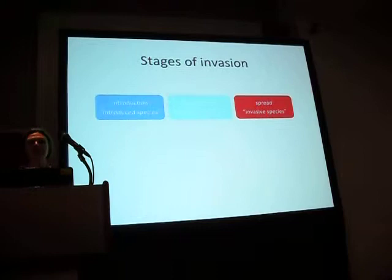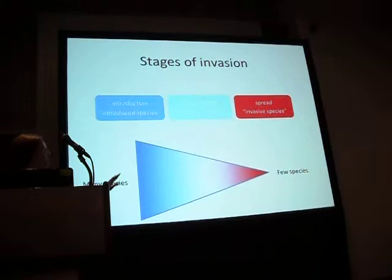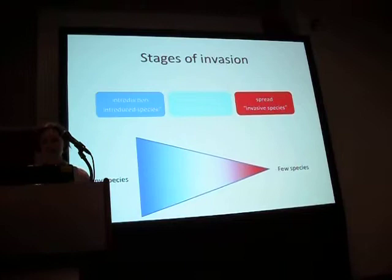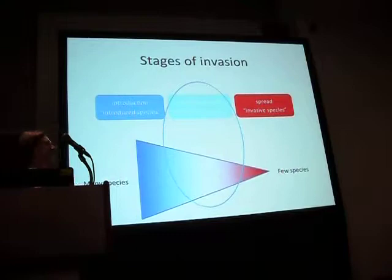This is a filtering process where we go from many species to start out, down to a few species that become invasive at the end. Throughout this talk, I'm going to be focusing on this intermediate establishment phase and asking what prevents or allows some species to become established.